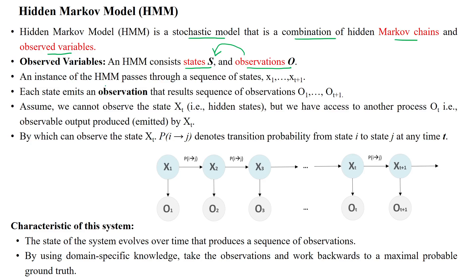An instance of HMM passes through a sequence of states. Consider that the set of states are available, which are denoted x1, x2, etc., and x_{t+1}. The state will be constructed depending upon the time period t. That is why we are using the variable t to denote the time period. Each state has its own time to generate its observations.